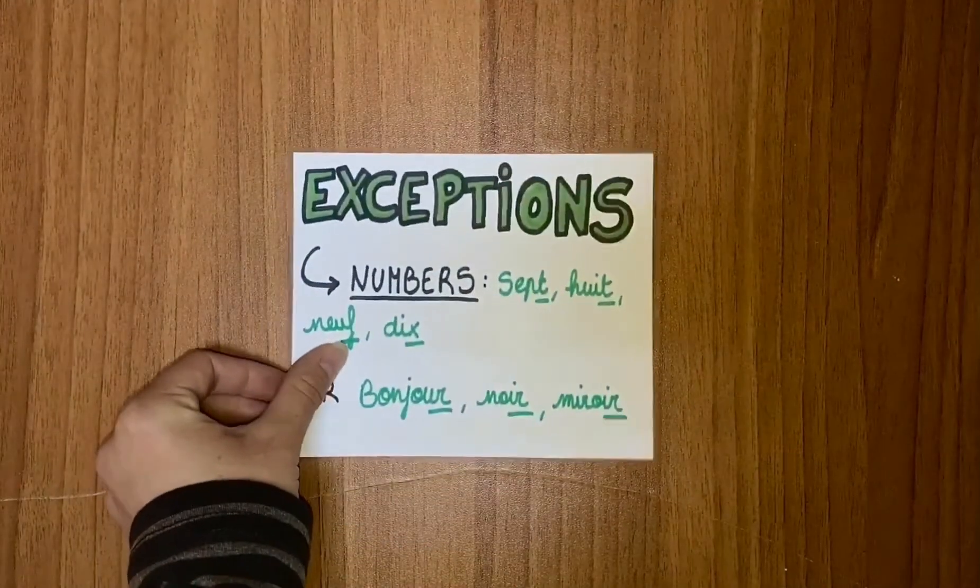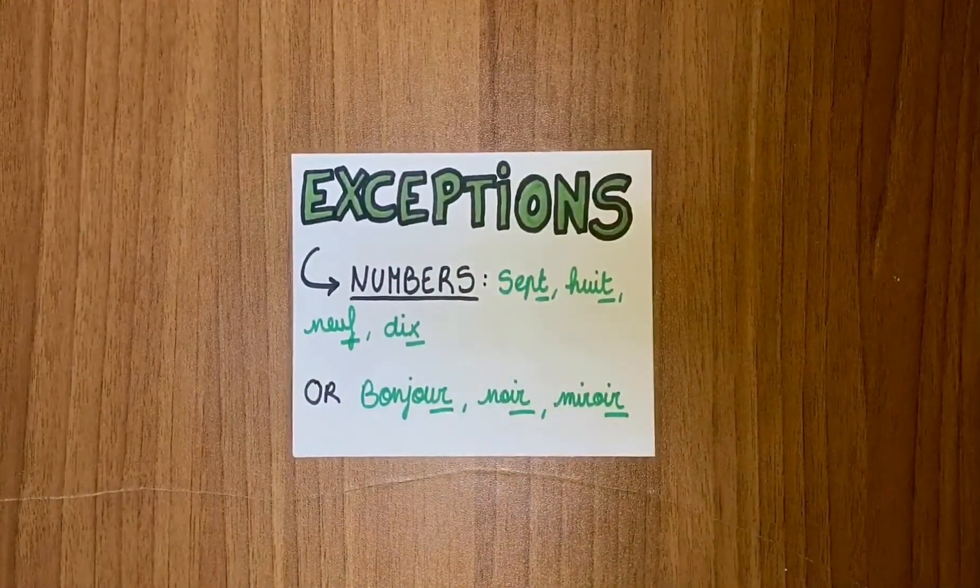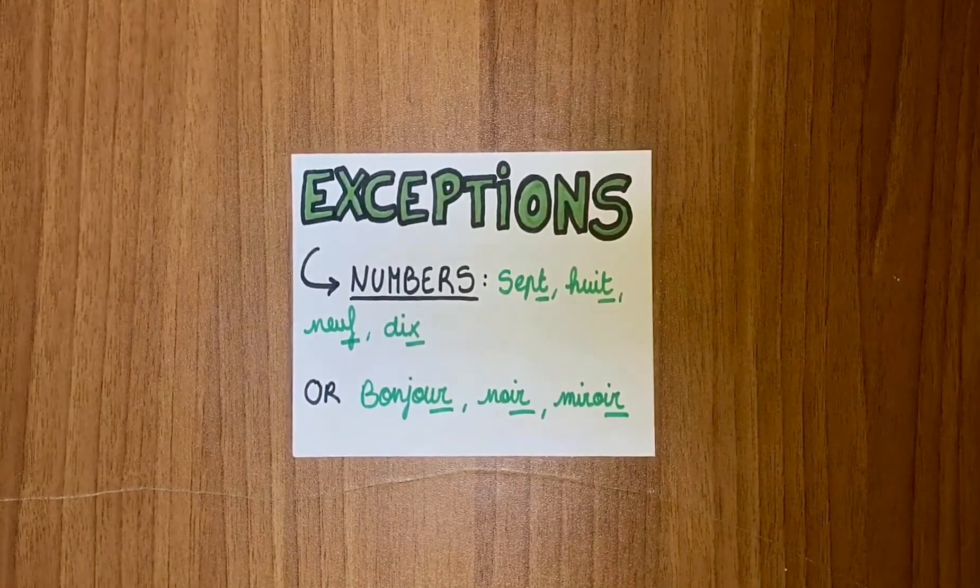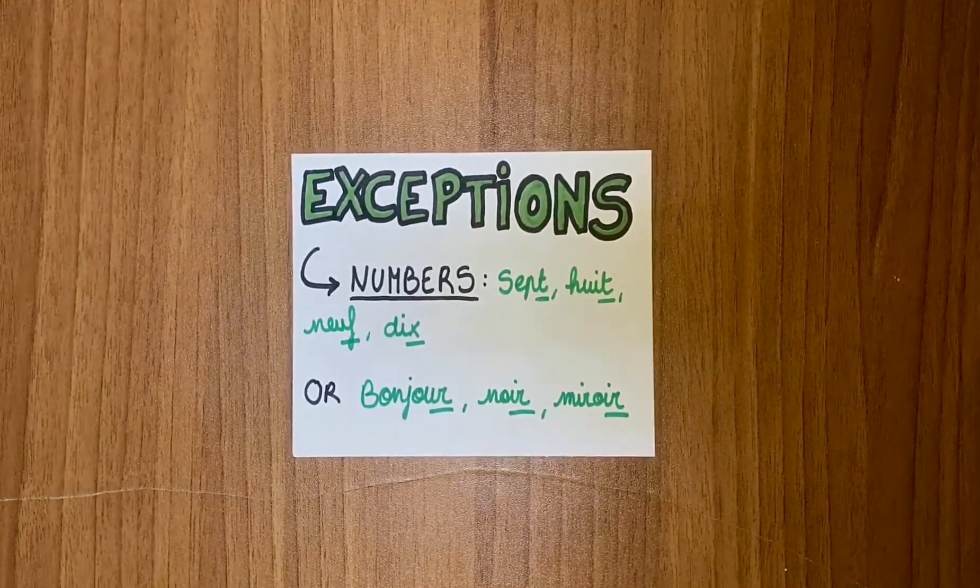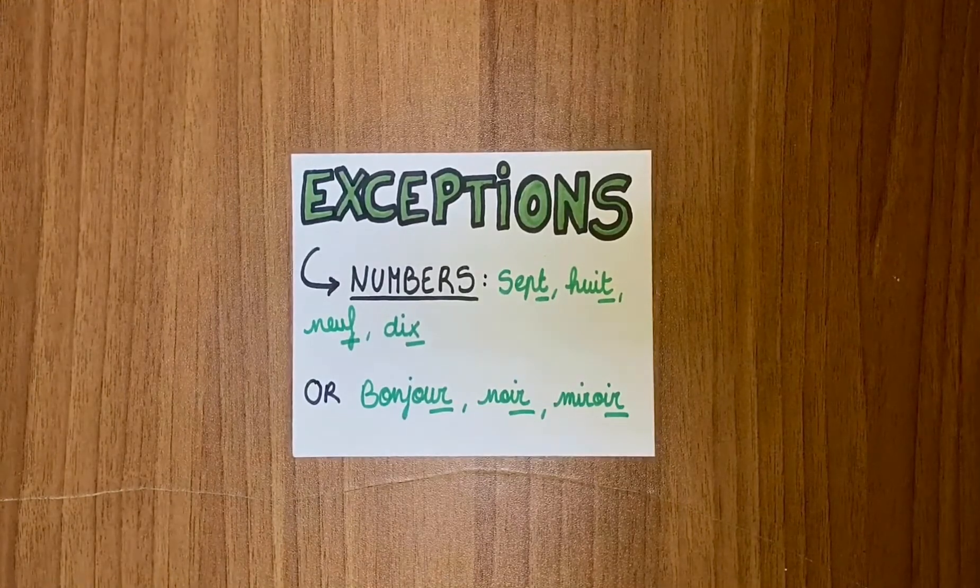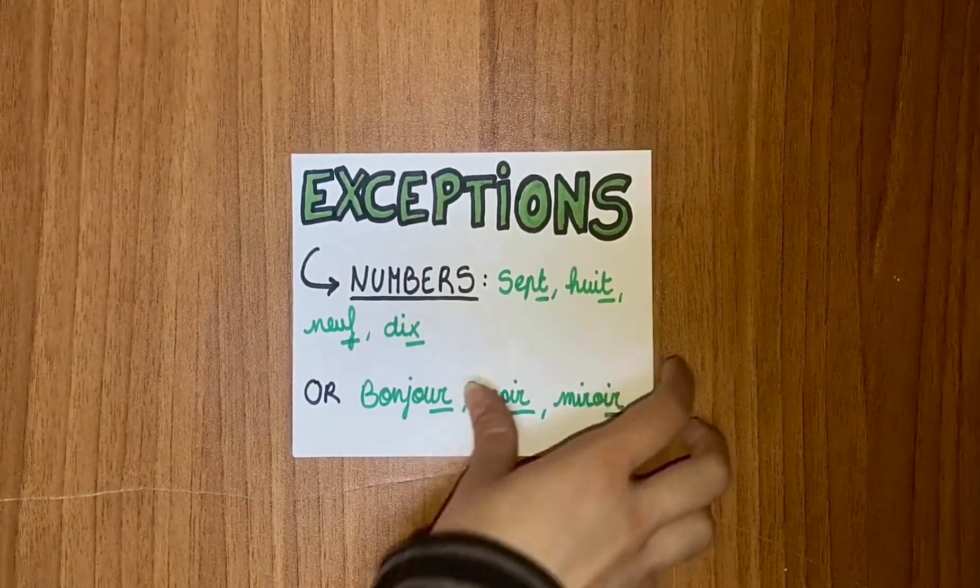With the numbers, for example, you will have to say 'set,' and not 'c,' or 'huit,' 'neuf,' 'dix.' But also with some words that finish with R, like 'bonjour,' 'noir,' 'miroir.'